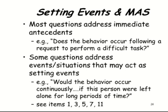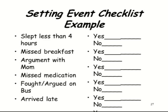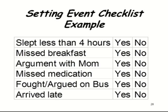You can use the MAS Motivation Assessment Scale, as some of its questions relate to setting events. Though I'm not a big proponent of that instrument — I get more information from interviews. From an interview I might identify that a student sleeps less than four hours, misses breakfast, has an argument with mom in the morning, has an issue on the school bus, or gets to school late — all may be issues affecting that student's behavior for the rest of the day. I may just keep track of that information with a simple checklist, or circle yes or no for whether the event happened that day.